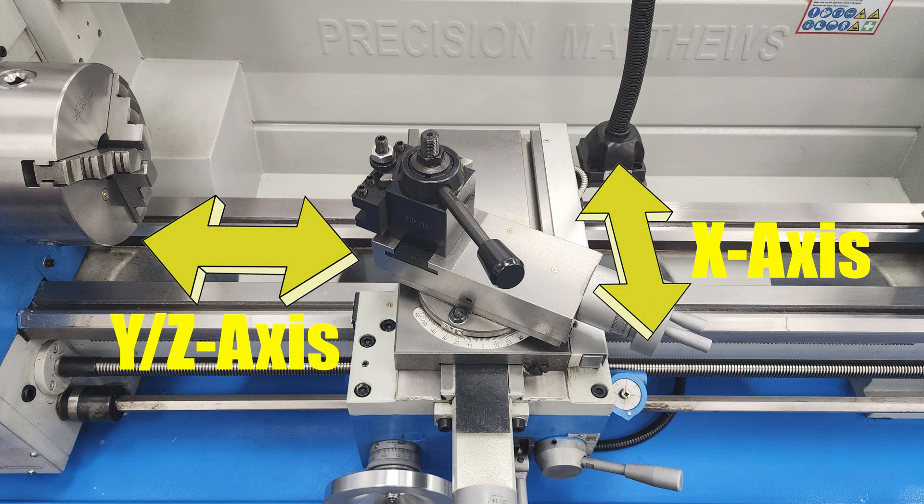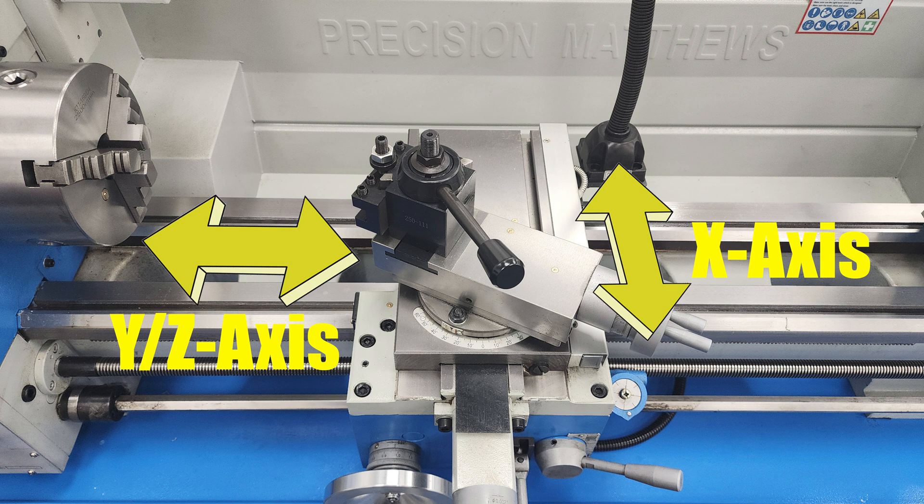First things first, the x-axis measures the movement of the cross slide. That may seem obvious, but if everyone knew that, I would get a couple dozen fewer calls per year than I currently do. Yes, it is different from how it is on the mill, and yes, it is different from the Cartesian plane that you remember from middle school math class.